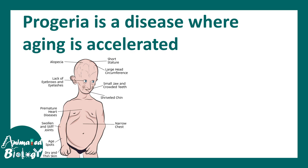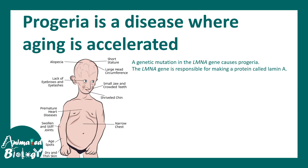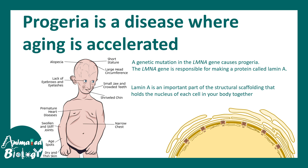If we take the example of progeria, which is a disease where aging is accelerated, we would see that there is a genetic mutation in the LMNA gene, or lamin A gene. This gene gives rise to the intermediate filament lamin A, which works like a supportive scaffold to the nuclear envelope. When there is a mutation in lamin A gene, there is a breakdown of the nuclear lamina, and as a result stem cells die, leading to accelerated aging in these individuals.